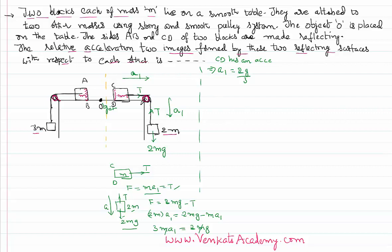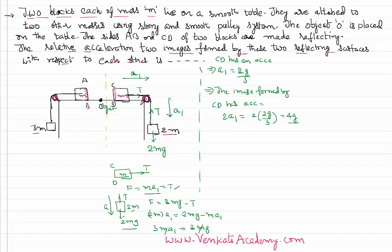Since CD is a mirror with acceleration 2g/3, the image formed by CD will have an acceleration double that of the mirror's acceleration. So the image formed by CD has acceleration = 2 × (2g/3) = 4g/3. That is with respect to the right-side CD mirror.